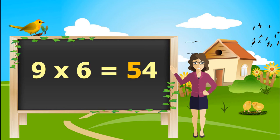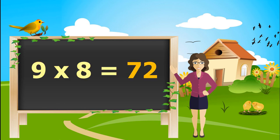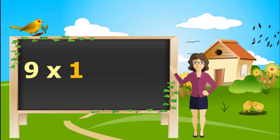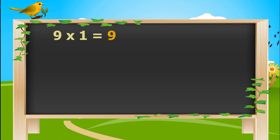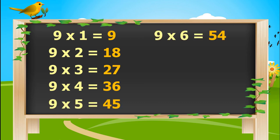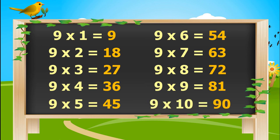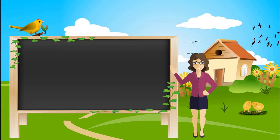9 sixes are 54. 9 sevens are 63. 9 eights are 72. 9 nines are 81. 9 tens are 90. 9 ones is 9. 9 twos are 18. 9 threes are 27. 9 fours are 36. 9 fives are 45. 9 sixes are 54. 9 sevens are 63. 9 eights are 72. 9 nines are 81. 9 tens are 90. Let's learn table of 10.